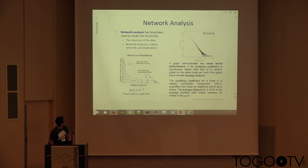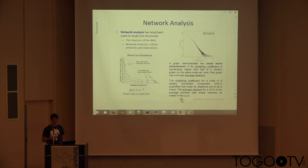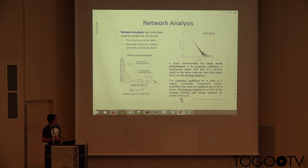In many networks, one of the key features is that they typically follow a power law distribution, where you basically see a lot of nodes with very few connections and a few nodes with large numbers of connections. These are typically called hubs — sometimes called party hubs because they bring everybody together. The web itself has been characterized as having this sort of characteristic, and more importantly, it has something called the small world phenomenon.